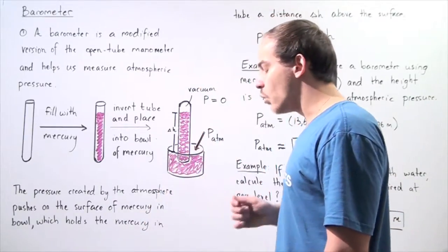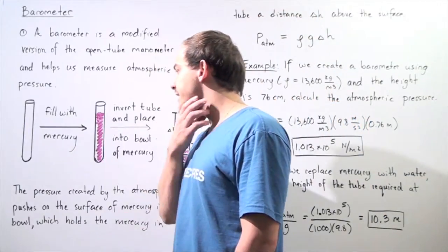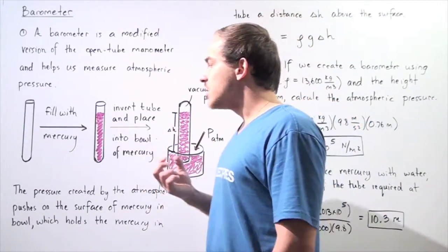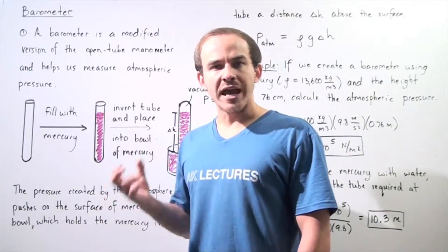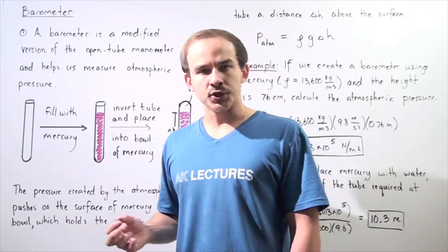So how exactly does one go about creating a barometer? A barometer can be created in the following two steps. We take a glass tube and we fill that glass tube with a certain fluid, let's say mercury.